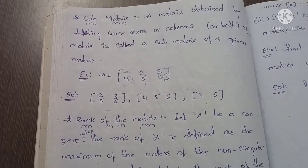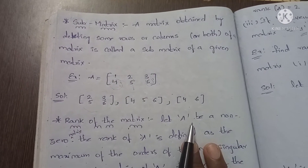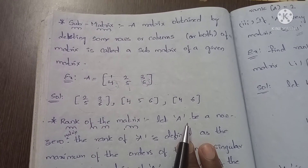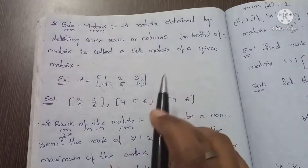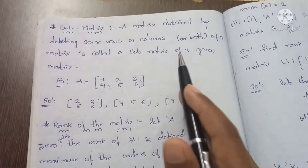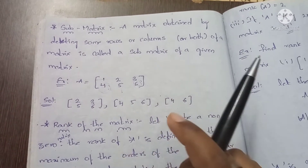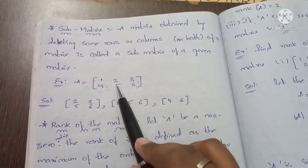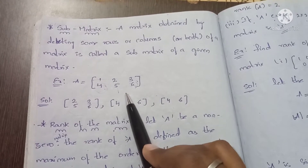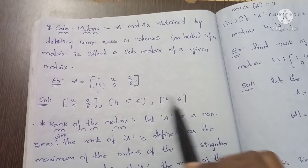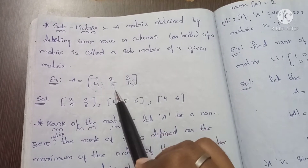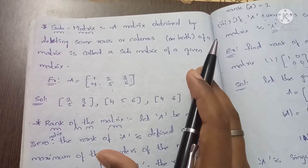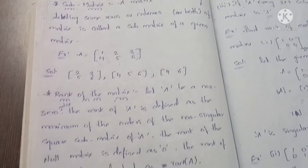Hi friends, today's topic is rank of the matrix. First, the sub-matrix: a matrix obtained by deleting some rows or columns or both of a matrix is called a sub-matrix of the original matrix. For example, in a 2x3 matrix, if you use the first two rows and two columns, the resulting 2x2 matrix is a sub-matrix.